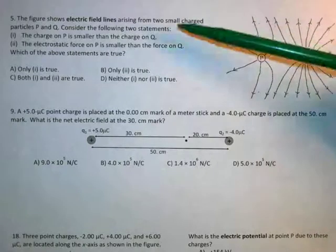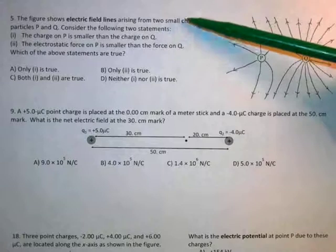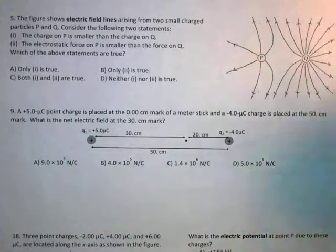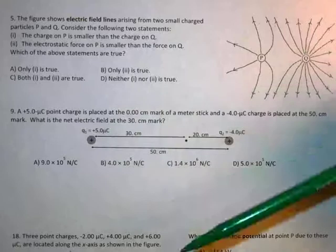the figure shows electric field lines arising from two small charged particles P and Q. So the first statement is that the charge on P is smaller than the charge on Q, and the second one is that the force on P is smaller than the force on Q. And we're trying to figure out which of the two is correct.